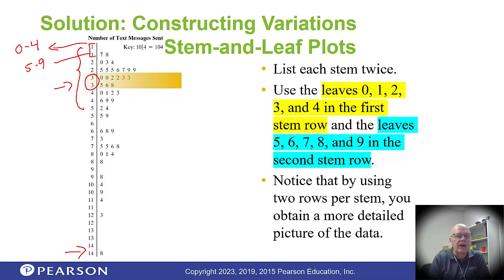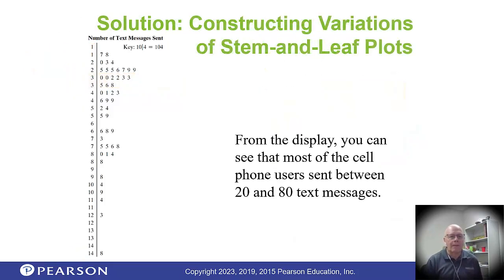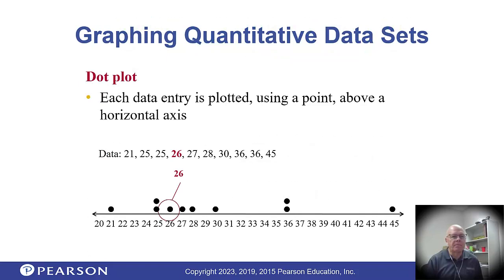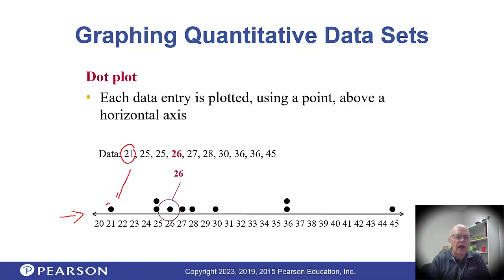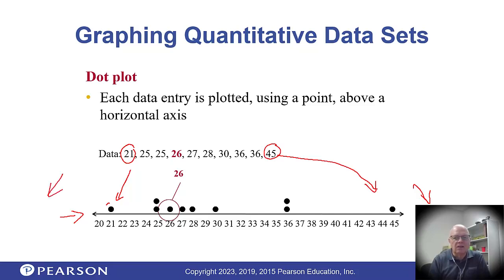Very similar to that is the dot plot. For a dot plot you need room on the axis — sort of like a number line — and you have to make sure all your data will fit. If 21 is your first value you need 21 on the left, and if the largest is 45 you need room for that on the right. You probably don't want too much extra space on either side because that will make your dot plot look a little strange and you won't be able to see patterns as easily.